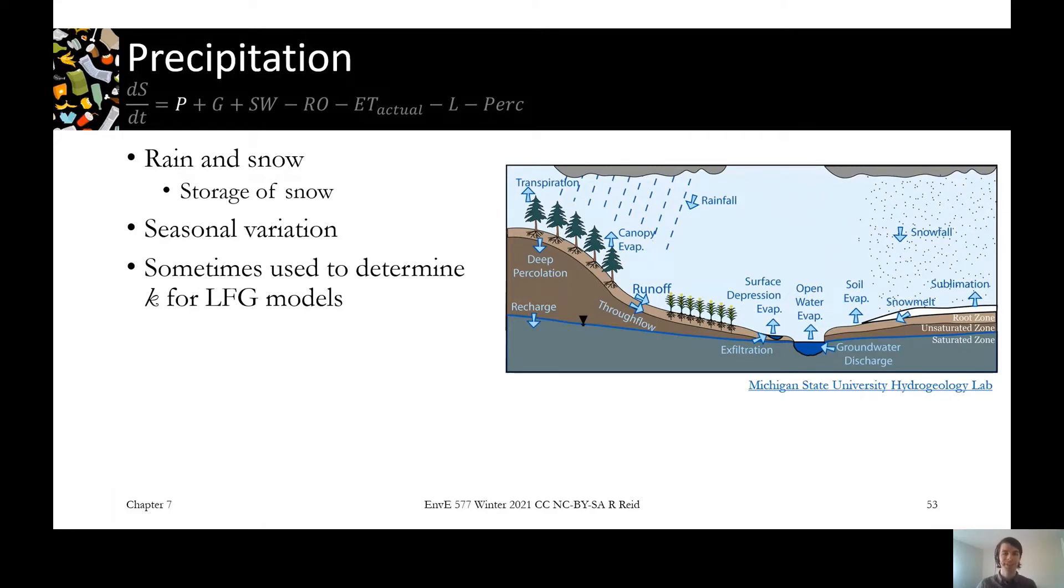Next we've got precipitation. This is an easy one. Any of the rain or snow coming onto our landfill, not something we can engineer around. It really comes down to engineering the other systems to manage this well. But interestingly, just because of, like I talked about in the biodegradation section,